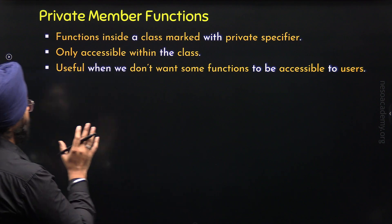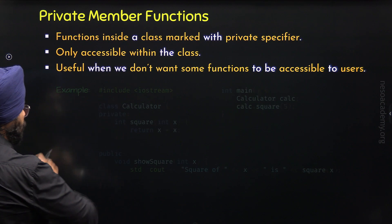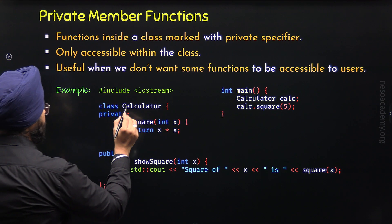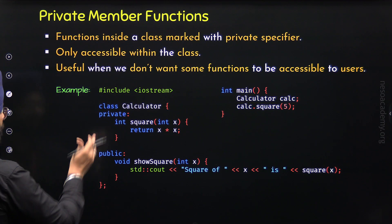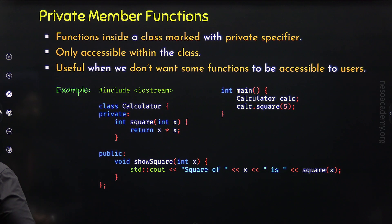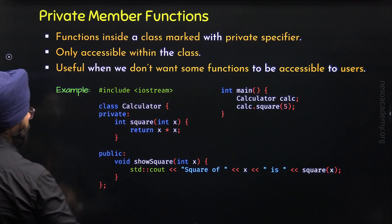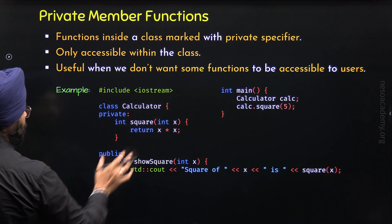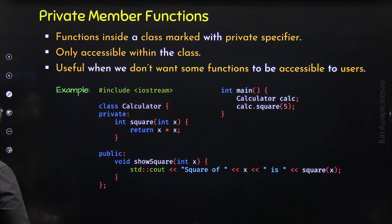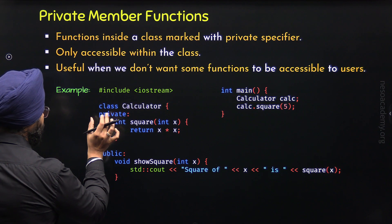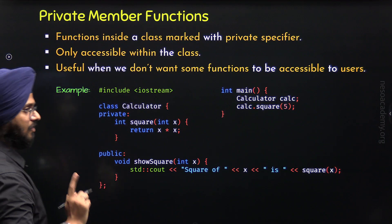Here is an example program to understand the usefulness of private member functions. I have defined a calculator class. In this class we have both private and public members. We have this private member function called square. This function is defined within the class and under the private label, so it is a private member function.